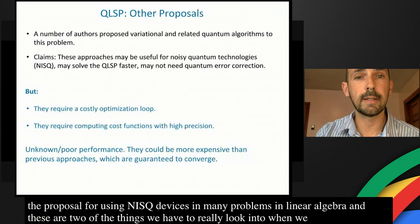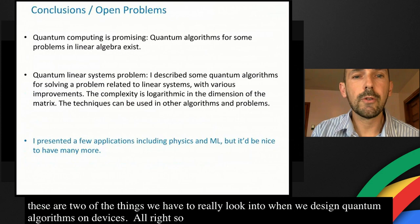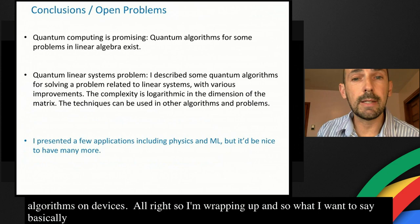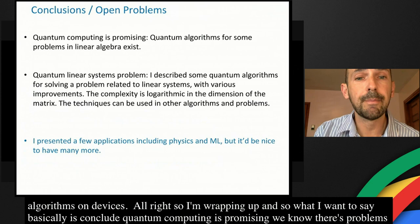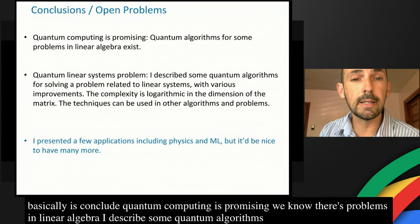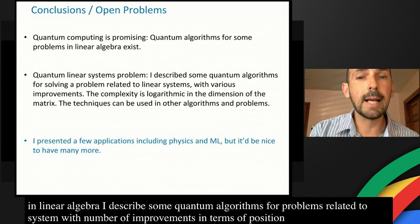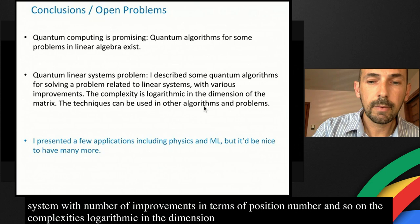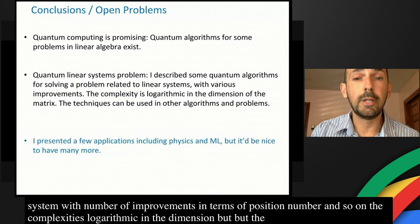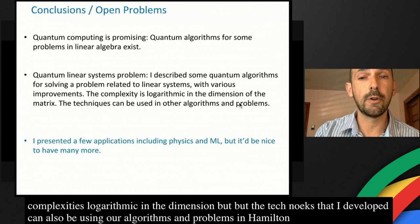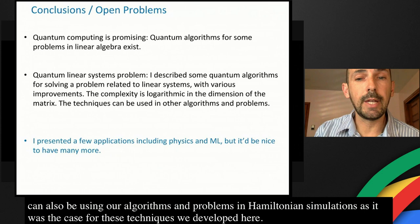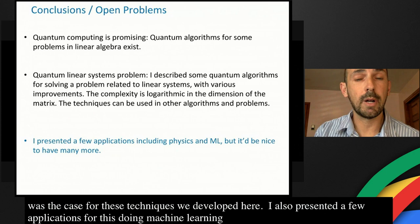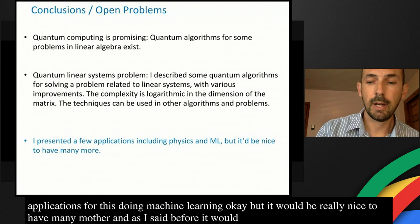To wrap up: quantum computing is promising and we have quantum algorithms for problems in linear algebra. I described quantum algorithms for linear systems with improvements in precision, condition number, and so on — with complexity logarithmic in the dimension. The techniques developed can also be used in other algorithms and problems, for example Hamiltonian simulation. I presented a few applications including machine learning, but it would be really nice to have many more. We do have the hammer, but it would be nice to have more nails.